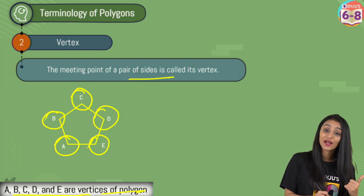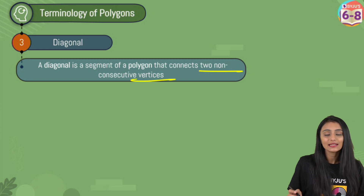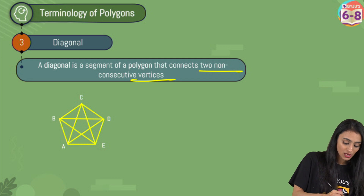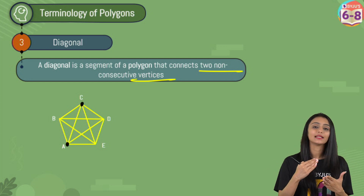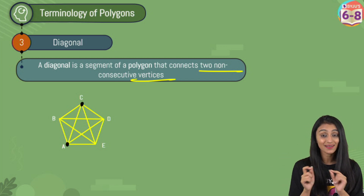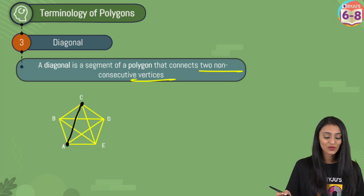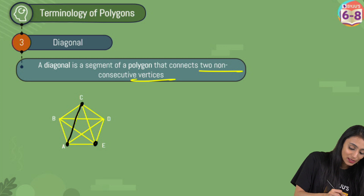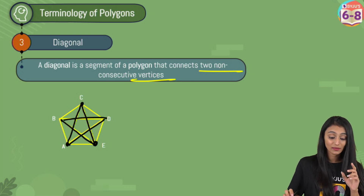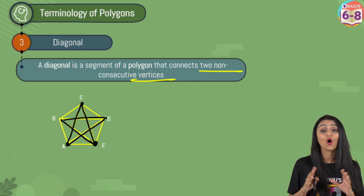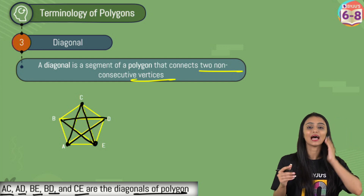Now let's move to the next term: diagonal. A diagonal is basically a segment of a polygon that connects two non-consecutive vertices. Non-consecutive means not adjacent — not the neighboring ones. For example, C and B are neighboring, so they are consecutive. But A and C are non-consecutive. If I join these two vertices with a segment, this AC is a diagonal. Similarly, EC is a diagonal, and also AD, BE, and BD. The vertices must be non-consecutive. So AC, AD, BE, BD, and CE are all diagonals of the polygon.